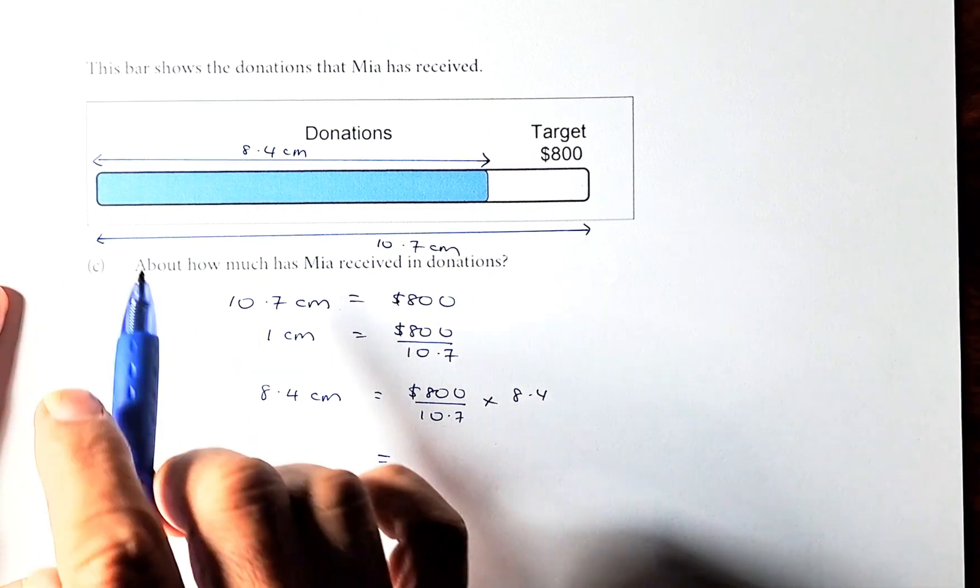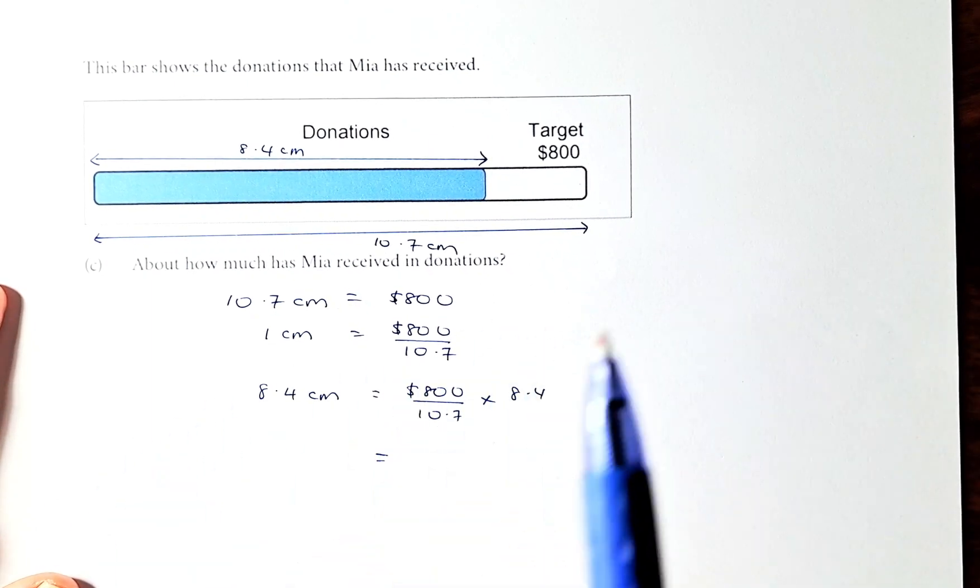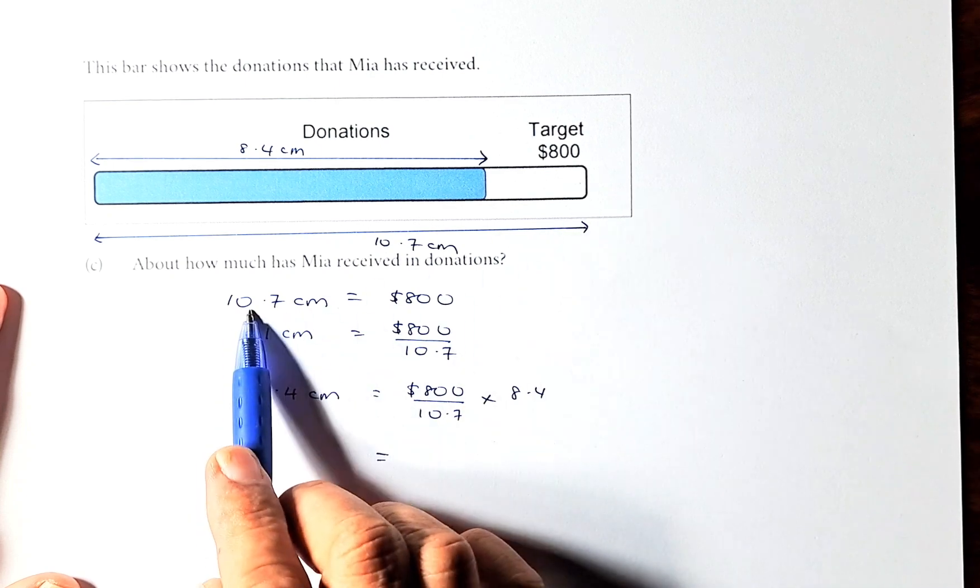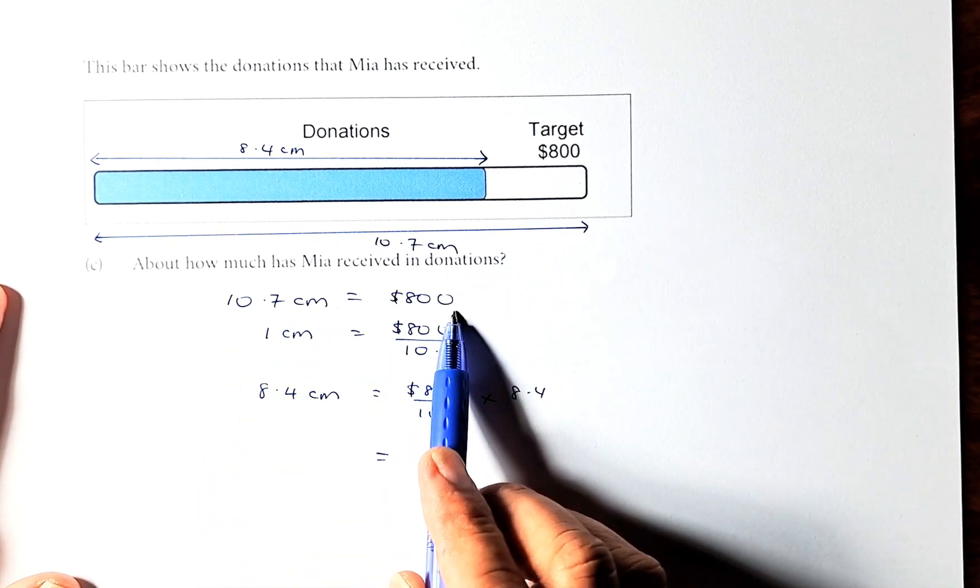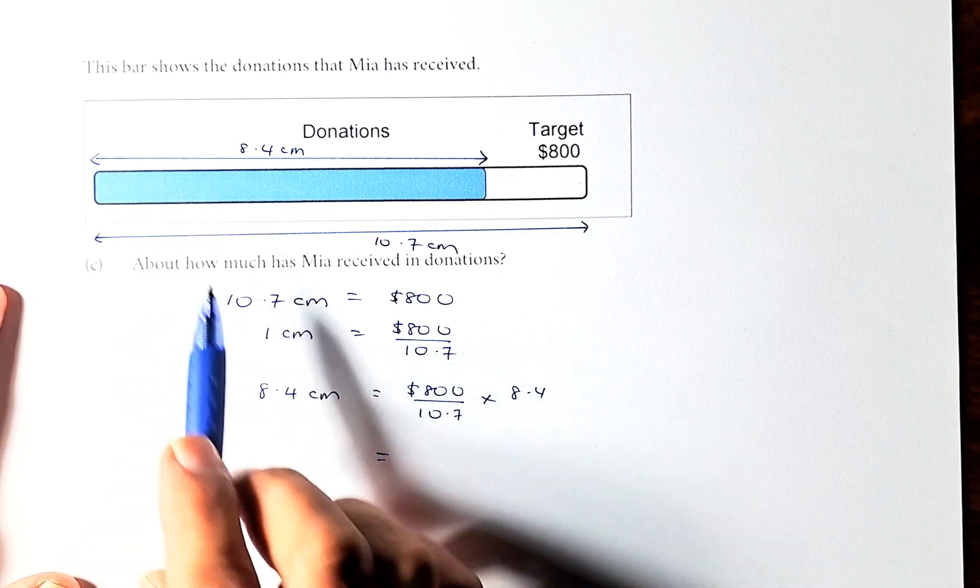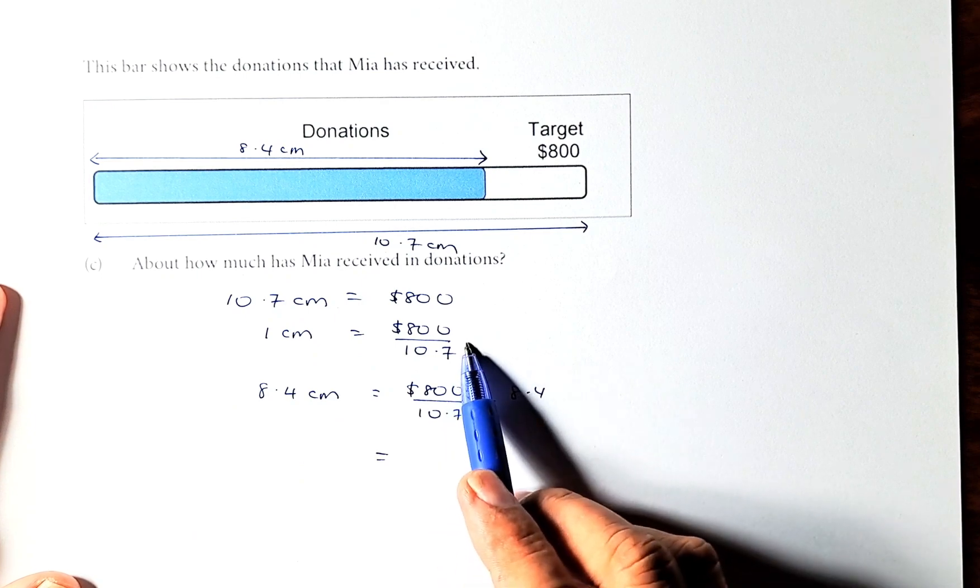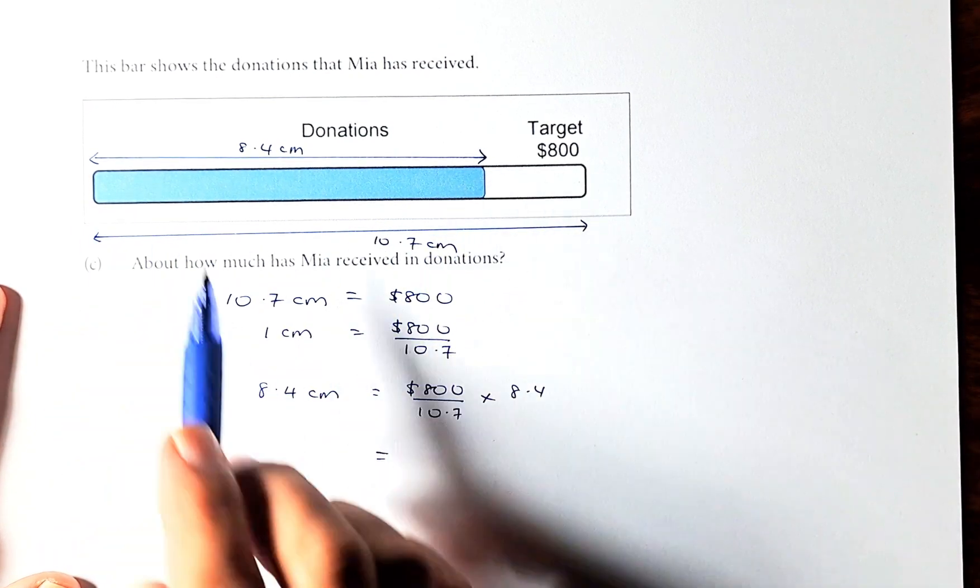The question is, the bar shows the donations Maya has received. About how much has Maya received in donations? So from here to here, which is 10.7cm. So 10.7cm is going to be $800. So now we're going to calculate what is 1cm. 1cm is just $800 divided by 10.7 and we leave it as it is.